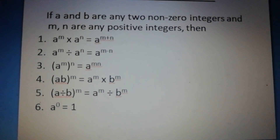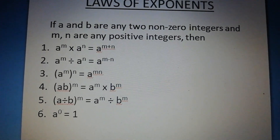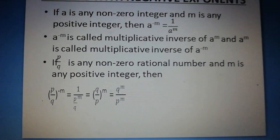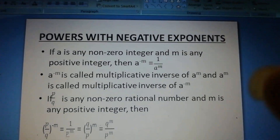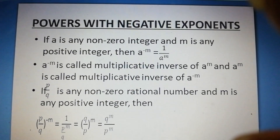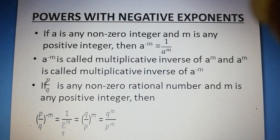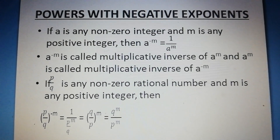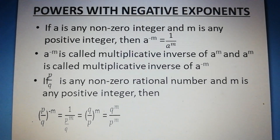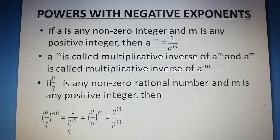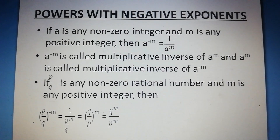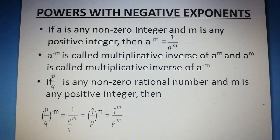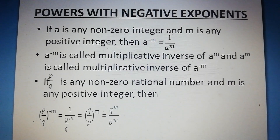And Number 6 — a to the power 0 is equal to 1. Next, we are going to learn about the topic powers with negative exponents. If a is any non-zero integer and m is any positive integer, then a to the power minus m is equal to 1 by a to the power m.